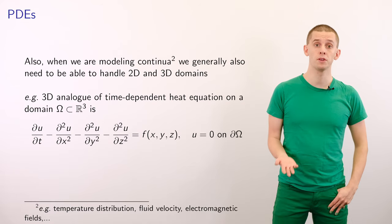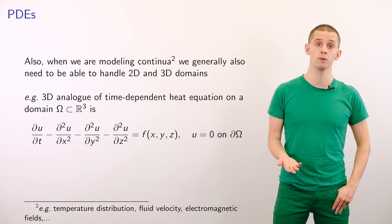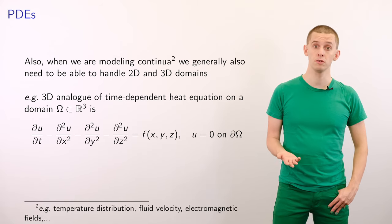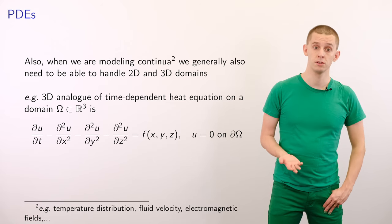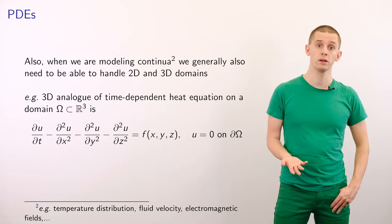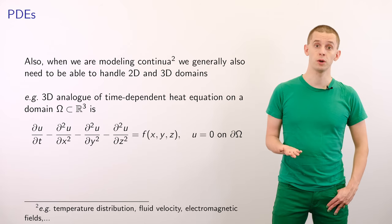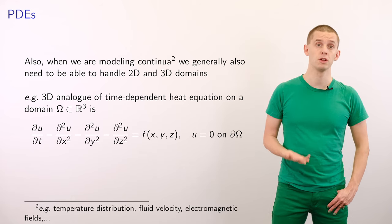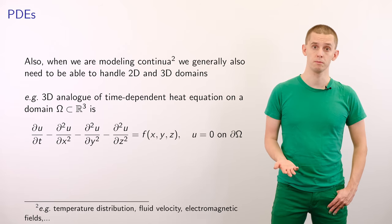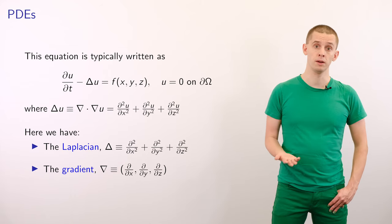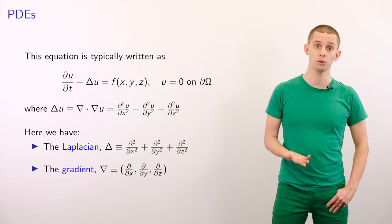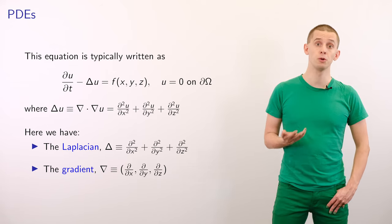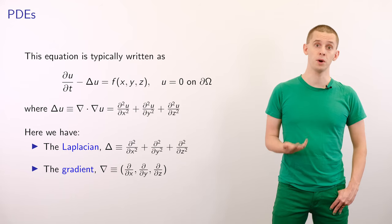We can generalize this picture to more than one dimension, which is useful for modeling a wide variety of continua that we encounter in real world problems. For example, the three-dimensional analogue of our heat equation on some domain Ω in R³ could be written as ∂u/∂t - ∂²u/∂x² - ∂²u/∂y² - ∂²u/∂z² = f(x,y,z). We would also have some boundary condition, for example, that u = 0 on the boundary of Ω. This equation can typically be written as ∂u/∂t - ∇²u = f. Frequently when we're dealing with multi-dimensional problems, it's helpful for us to use the language of multi-variable calculus, for example, the Laplacian or the gradient or divergence.